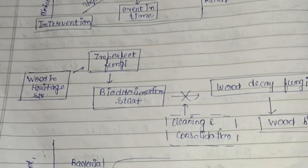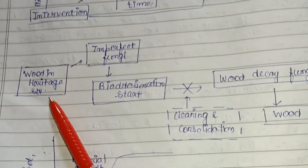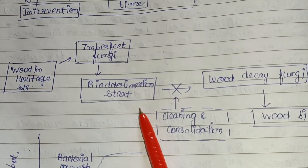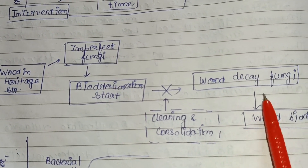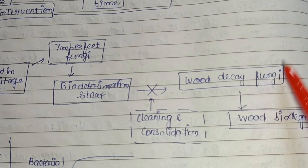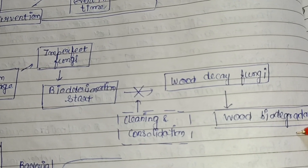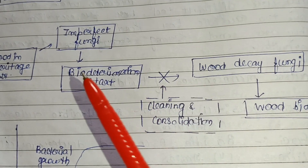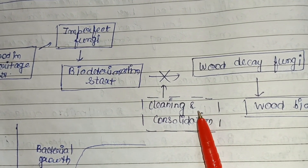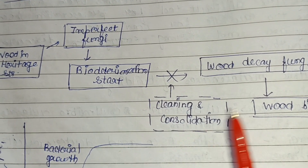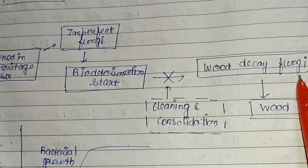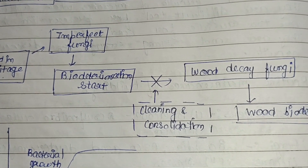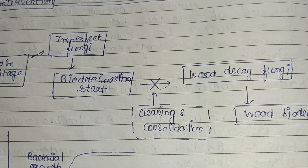This example shows wood decay in a heritage structure: imperfect fungi start biodegradation, and then wood decay fungi follow, leading to wood biodegradation. But if at the point when biodegradation starts we carry out cleaning and consolidation, the decay fungi cannot proceed — the wood decaying process can be controlled.